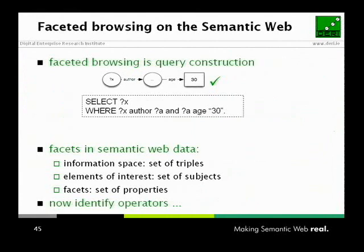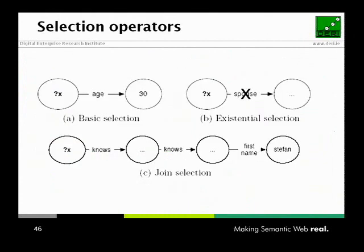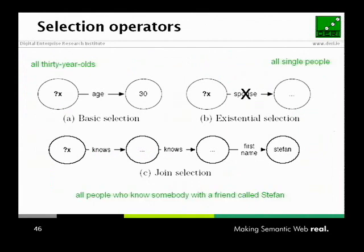If you look at semantic web data and graph data, faceted browsing is basically query construction. If this is the graph, this is kind of the query — you select something and build constraints on the where clause. The information space is sets of triples, the elements of interest are sets of subjects, and the facets are the properties — the outgoing arcs. We've identified several operators you can combine: basic selection like 'all things age 30', existential selection like 'people who are unmarried', joins over the graph like 'somebody who knows somebody who knows Stefan', and intersections of these — a 30-year-old unmarried person who knows Stefan in some second degree.